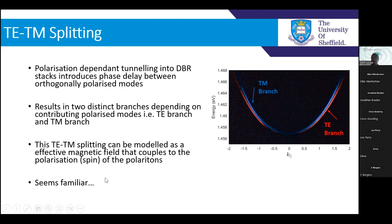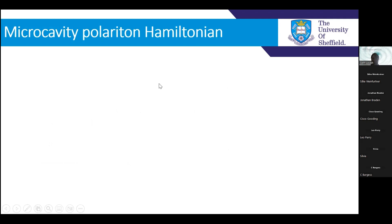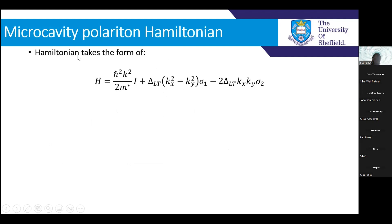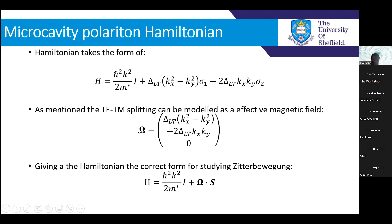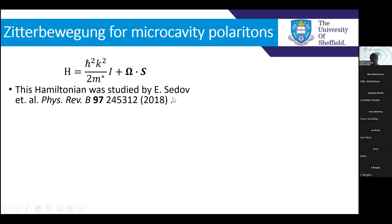Most importantly, you can model this TE-TM splitting as an effective magnetic field that couples to the polarisation — the pseudospin — of the polaritons. That seems quite familiar: it's one of the main ingredients for Zitterbewegung. So let's see if we can turn the microcavity polariton Hamiltonian into the Hamiltonian we want to see. You have a single-particle energy contribution, contributions due to TE-TM splitting, and if we model those as a magnetic field with components in the X and Y directions, you get a Hamiltonian with energy depending on the wave vector and this coupling between the magnetic field vector and the pseudospin.